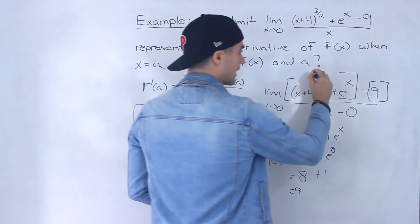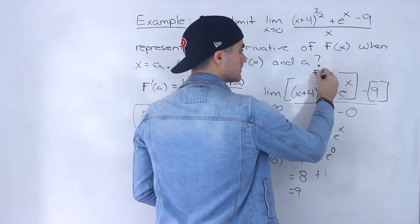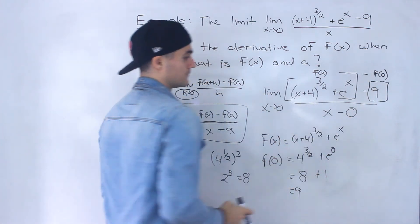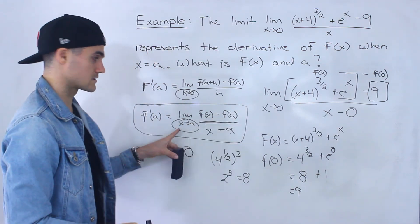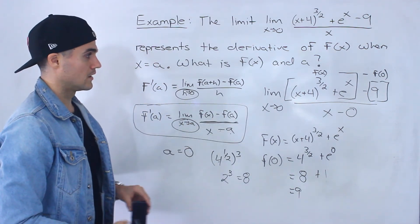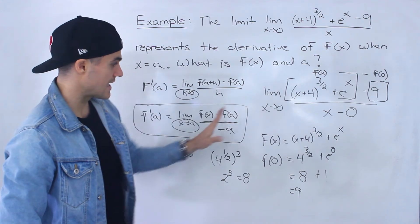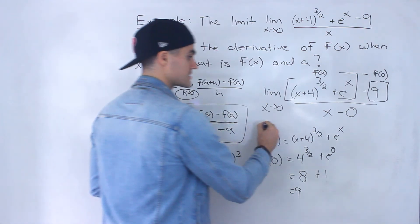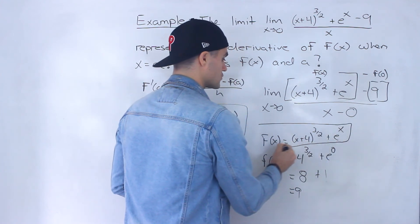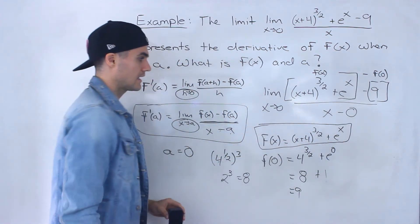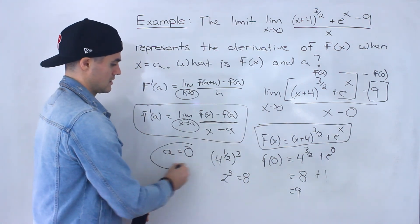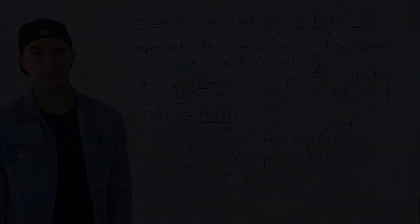And so notice that we got f(x) minus f(0) all over x minus 0, and then we got the limit as x approaches 0. Notice that this is in that format. And this here, f(x) = (x+4)^(3/2) + e^x is the function we're working with, and so that's the answer. That's the function. And then that is the particular a value.